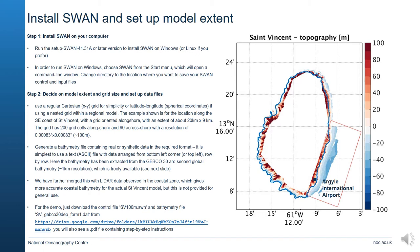You need to set up the model extent. In this case we have generated a model setup for the southeast coast of St. Vincent, which contains the Argyle International Airport. We chose to orient the grid along-shore, with an extent of about 20 kilometers along-shore and 9 kilometers cross-shore. The grid has 200 cells along-shore and 90 cross-shore at a resolution of around 100 meters — actually closer to 92 meters.